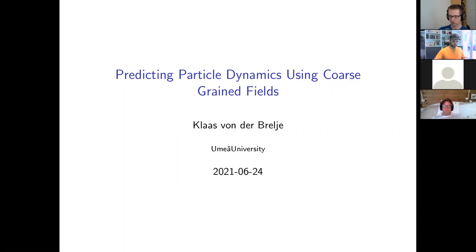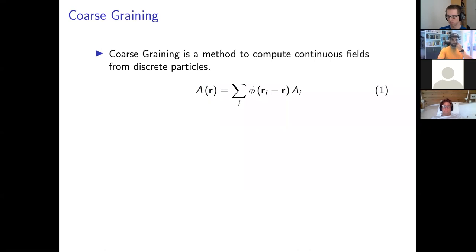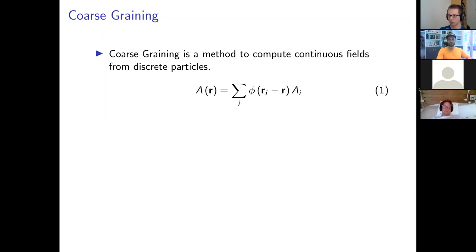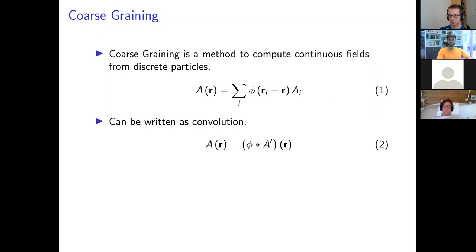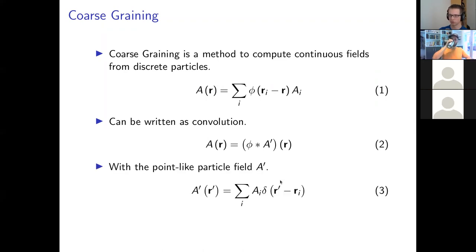I'll start with what coarse graining is in general. It's a method to compute continuous fields from a set of discrete particles. We have the particles with their positions r_i and their properties a_i, and then we have this formula — the fundamental coarse graining equation — which the whole thesis revolves around, and which we use to compute these continuous fields. It can also be written as a convolution if we introduce the field a-prime, which treats every particle as point-like with a delta distribution. This convolution form was useful for doing some proofs in the thesis.